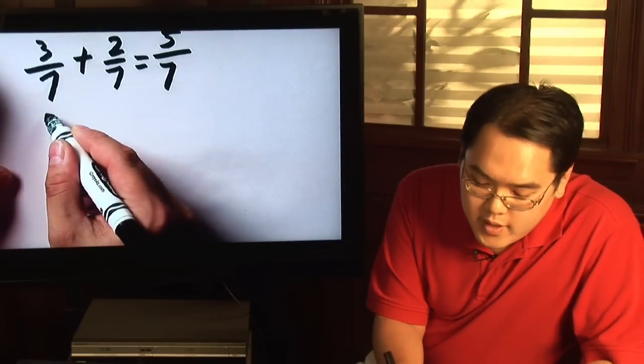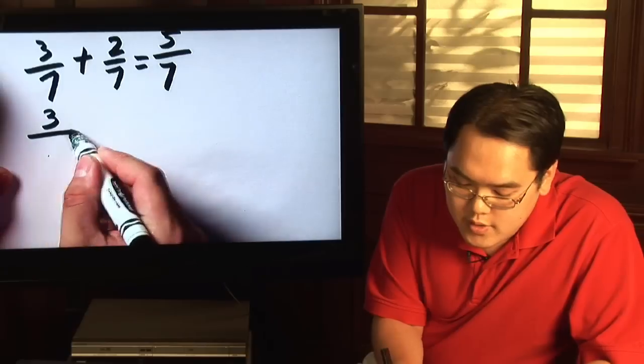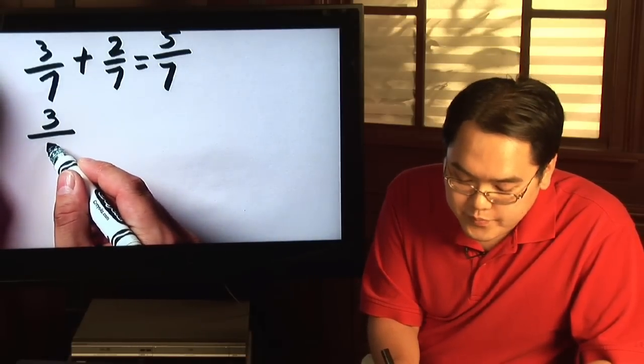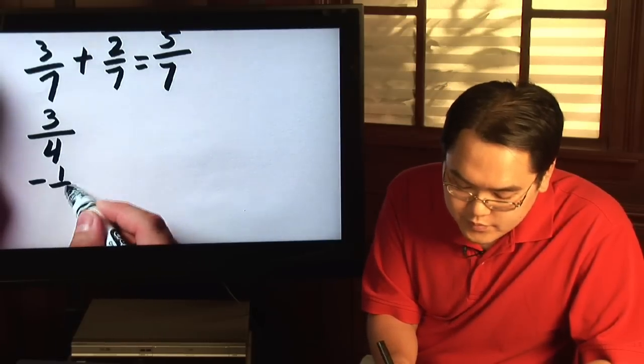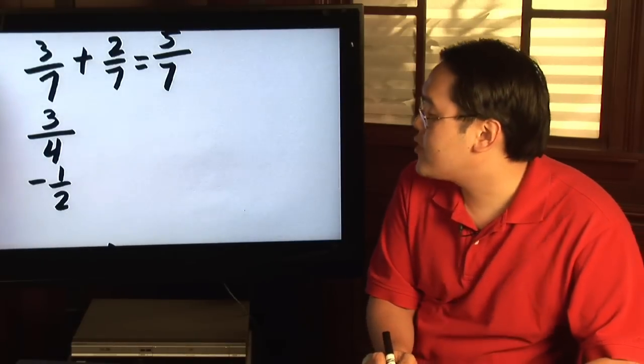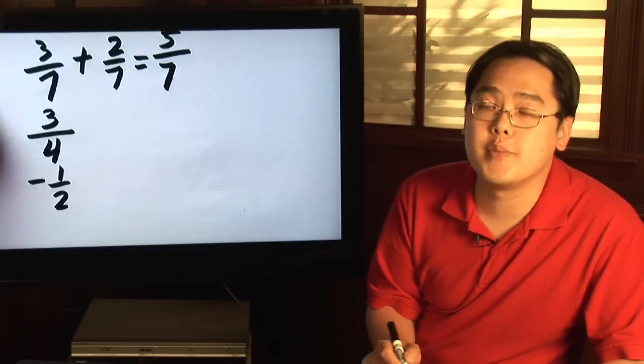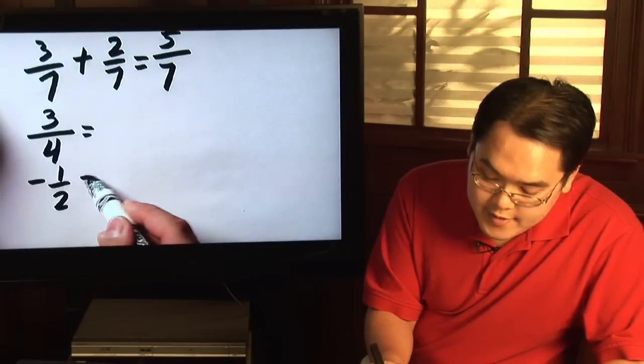If you have a fraction that's being subtracted with another fraction, but they have different denominators, then you have to find the least common denominator between the two to continue on.